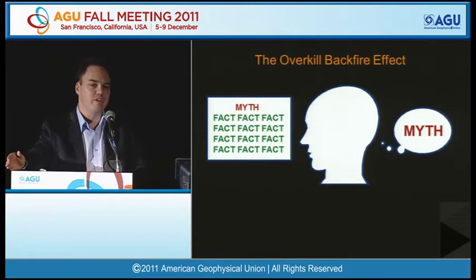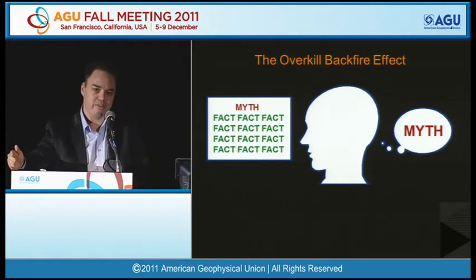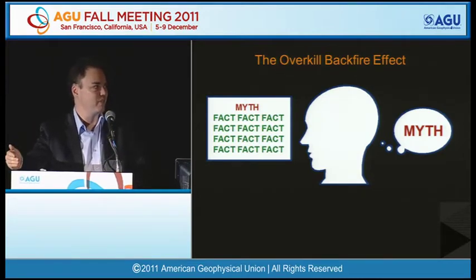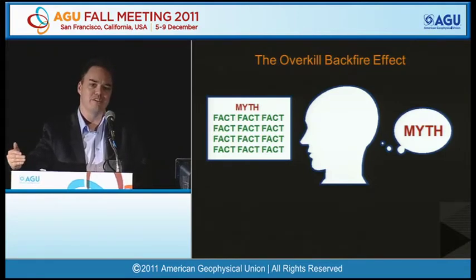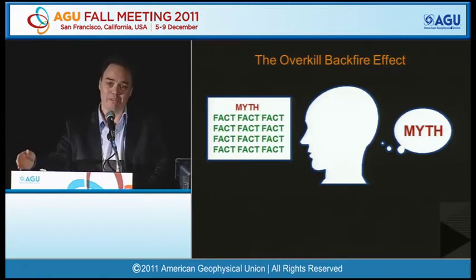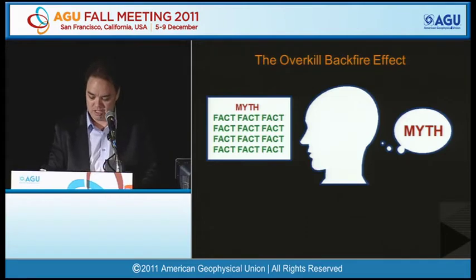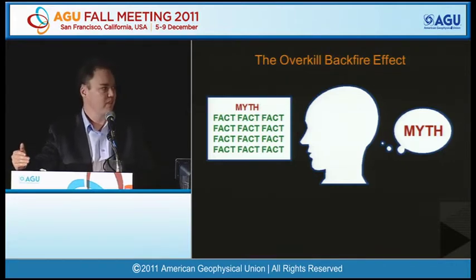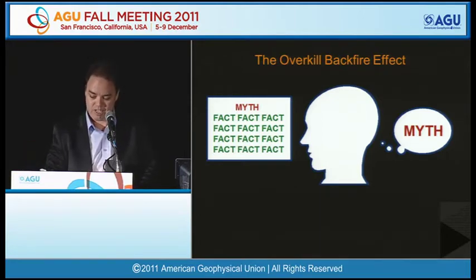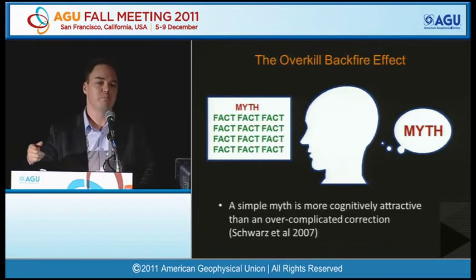Another trap to watch out for is the overkill backfire effect. You'd normally think — and this is how I started thinking when I ran SkepticalScience — that the more arguments you give to show that a myth is false, the more successful you would be. But it turns out that the opposite can be true. In one experiment from the same Norbert Schwartz paper, when participants were offered 12 arguments against a piece of misinformation it actually ended up reinforcing the myth. Processing a lot of arguments takes a lot of effort, so to a reader a simple myth is more cognitively attractive than an overcomplicated correction.